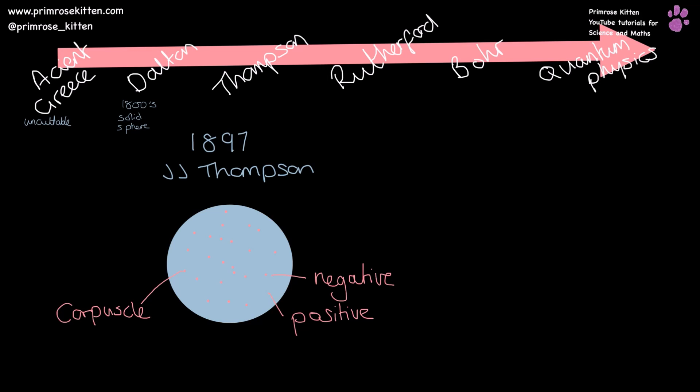In 1897, J.J. Thompson developed the model further. He described negative particles — what he called corpuscules, and we now call electrons — embedded in a sphere of positive charge. This is also known as the plum pudding model.